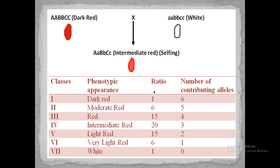This ratio is very important to learn. There are different contributing alleles involved. If the phenotypic appearance of the wheat kernel is dark red, there would be 6 contributing dominant alleles. As the number of contributing alleles decreases, the coloration of the kernel also starts to fade. With 6 dominant alleles the kernel is dark red, while with 0 dominant alleles the kernel appears white, as all recessive alleles show no phenotypic expression.